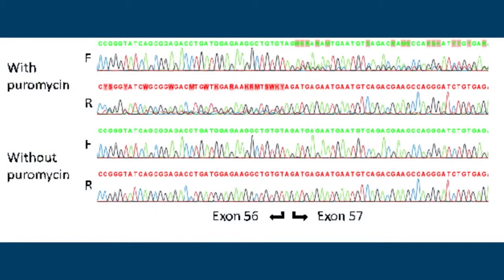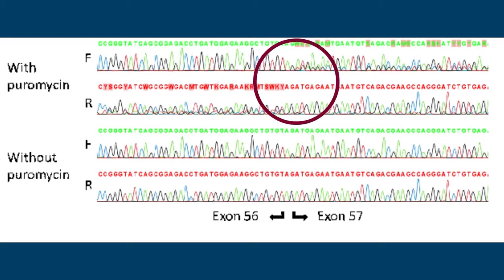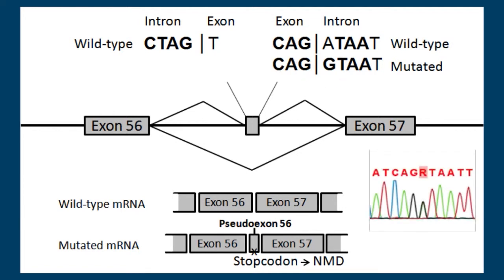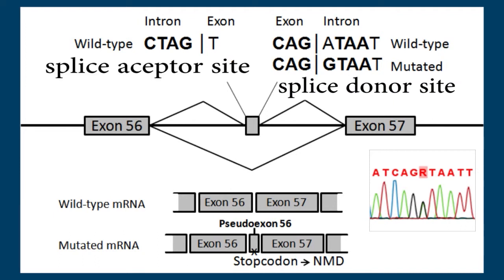On the edge between exon 56 and 57, a double peak pattern was observed, which suggested the existence of a pseudo-exon, which was confirmed by purification of the aberrant PCR fragment. Sequencing of the intron revealed an A to G transition, causing the generation of a new splice donor site. Together with an existing cryptic splice acceptor site, this resulted in the inclusion of a pseudo-exon of 90 base pairs.